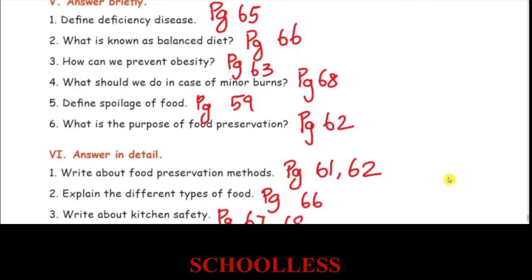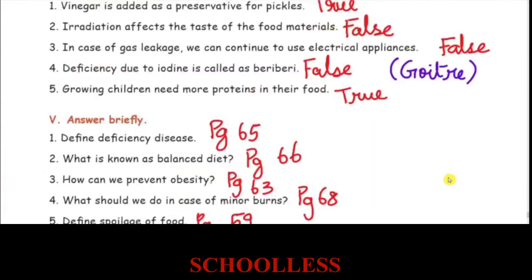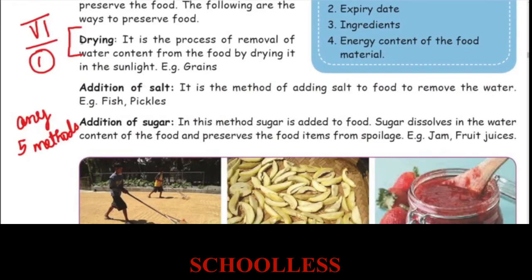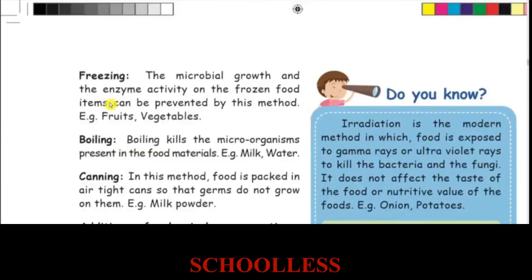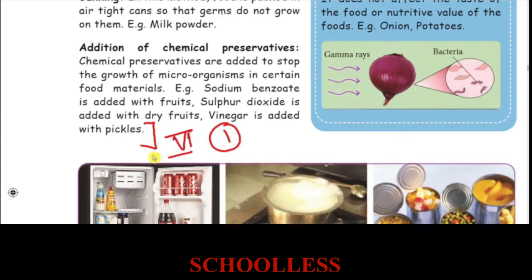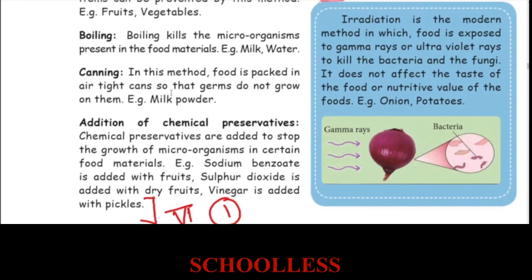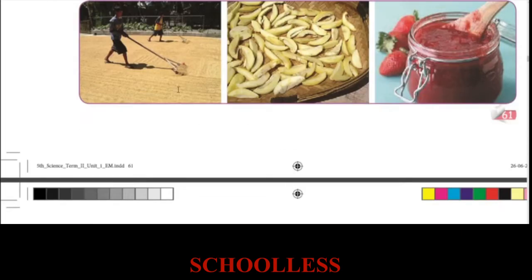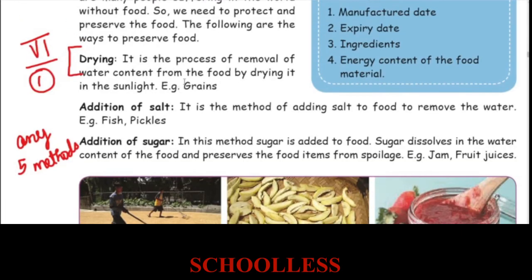Write about the food preservation methods. Page number 61. The methods include drying, addition of chemical preservatives, and others — there are about 5 methods in total.